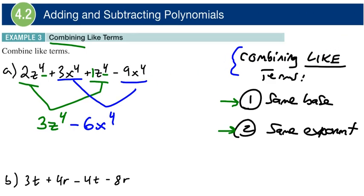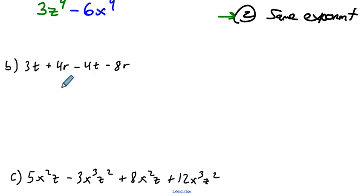Excuse me there. Let's move on down here. Let's do the same thing. Let's go ahead and combine like terms. I see a 3t and a negative 4t. If I combine those together, I have a negative 1t, right? Alright, 3 minus 4 is negative 1.